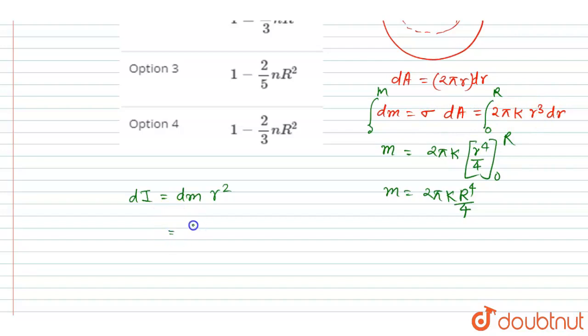Right, dI, so 2πk is the constant, so r cube will be r to the power 5 dr integration. Since we want the whole disk, we want the moment of inertia of the whole disk, right? So integrate it from 0 to capital R.